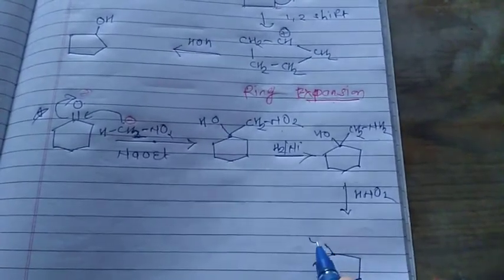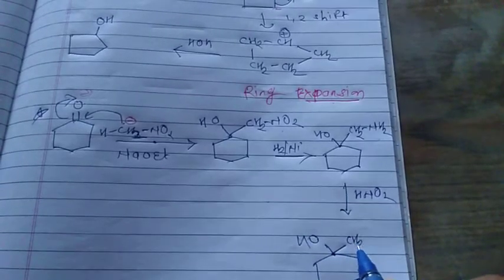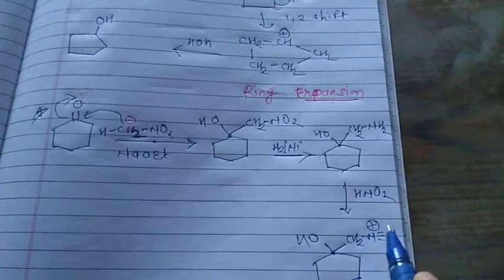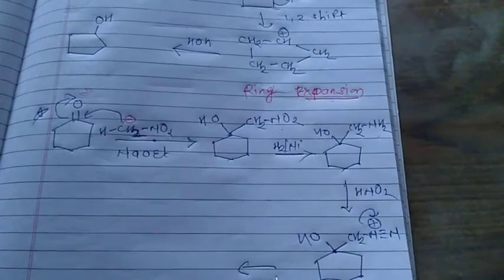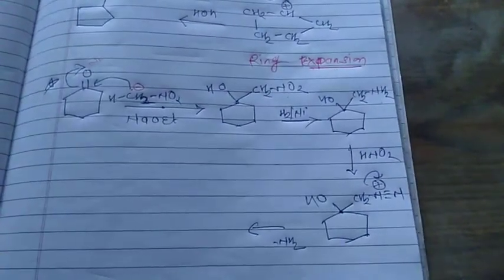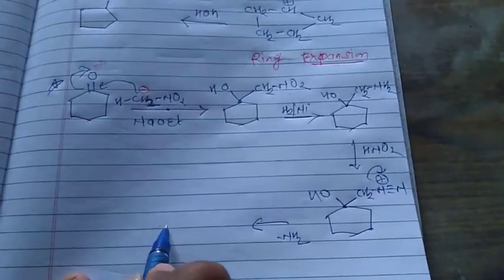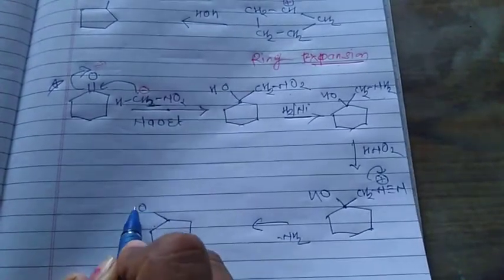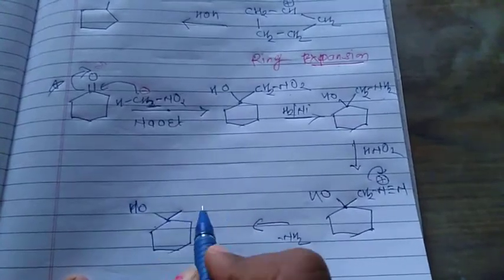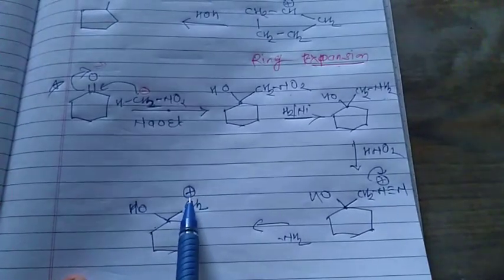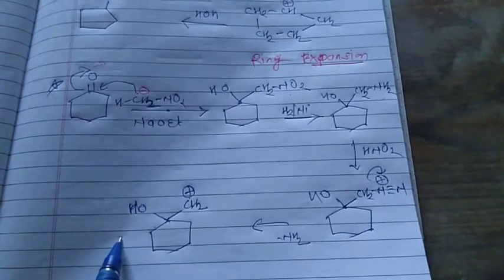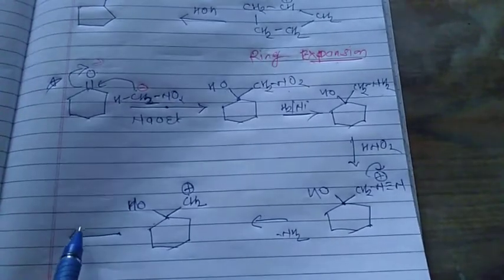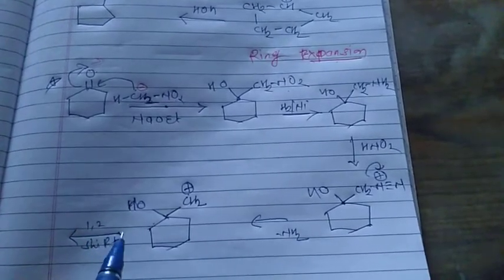The diazo compound is formed like this: there is an OH compound and this is CH2 with triple bond N plus. After formation of this diazo compound, there is removal of N2. After this, there is a formation of a carbocation: this is the OH, and this is CH2 plus — the carbon becomes a carbocation. After that, there is a 1,2 shift or 1,2 rearrangement.